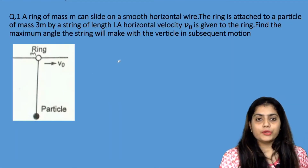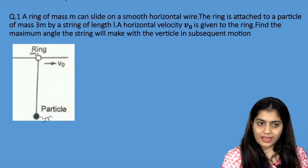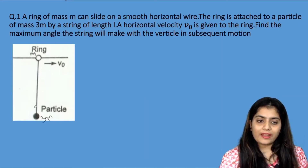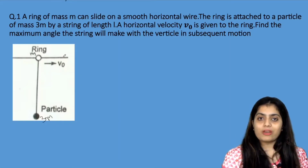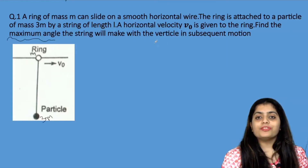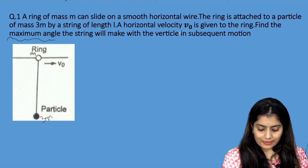The information given in this diagram is a ring which has a string and a wire connected with a 3M mass particle. The ring is given a V0 velocity in the horizontal direction. We have to find the maximum angle which the particle will make with the vertical. So, when will the maximum angle be made?